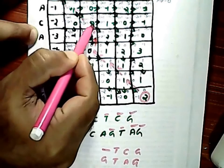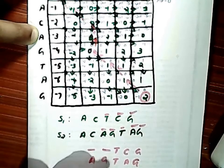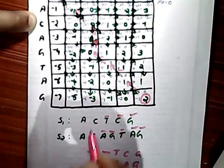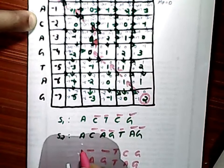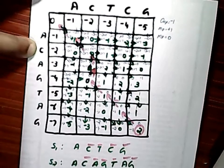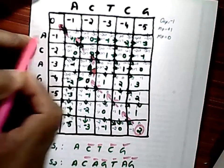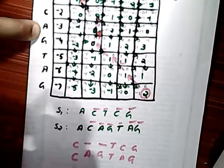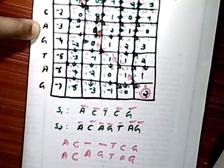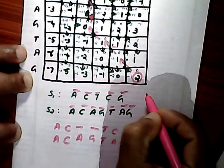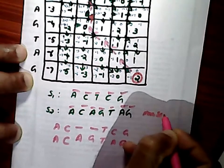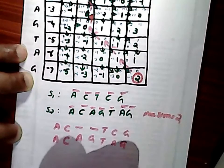The next arrow is also vertical, so we place a gap in the top sequence and align A for the second sequence. Moving to the next position, the next arrow is diagonal, so we align C and C from both axes. The last arrow mark is also diagonal, so we choose nucleotides A and A. We have now aligned both sequences. The aligned sequence S1 becomes A, C, Gap, Gap, T, C, G, and the aligned sequence S2 is A, C, A, G, T, A, G. The maximum alignment score is two.